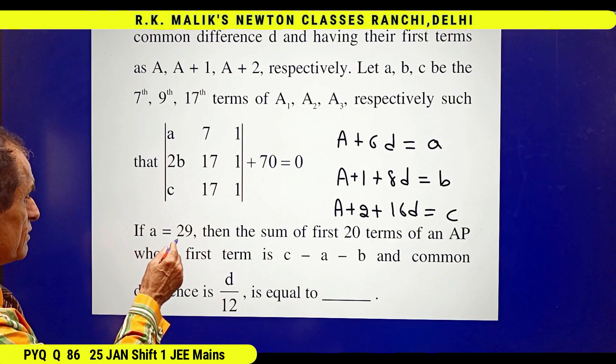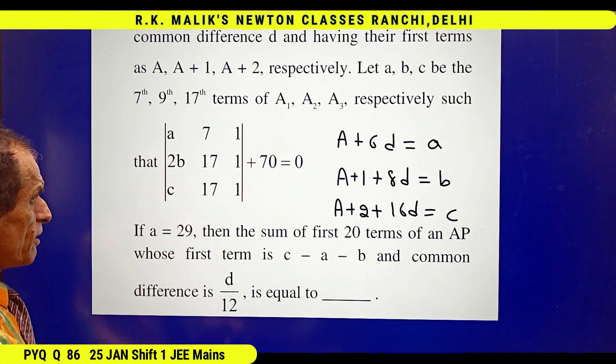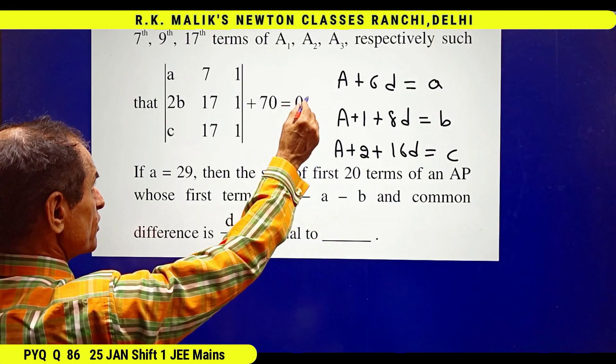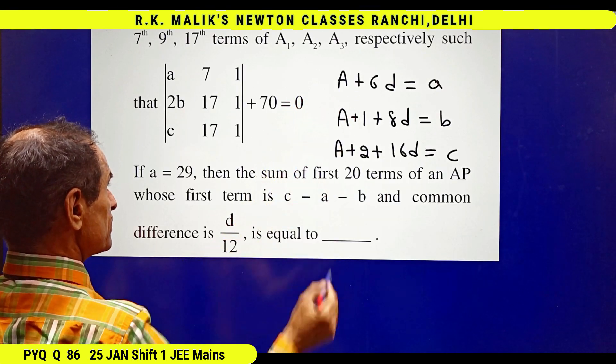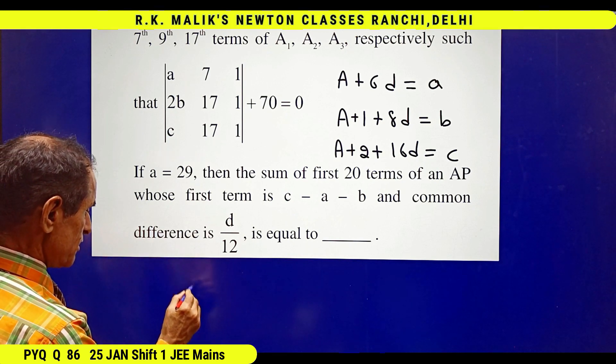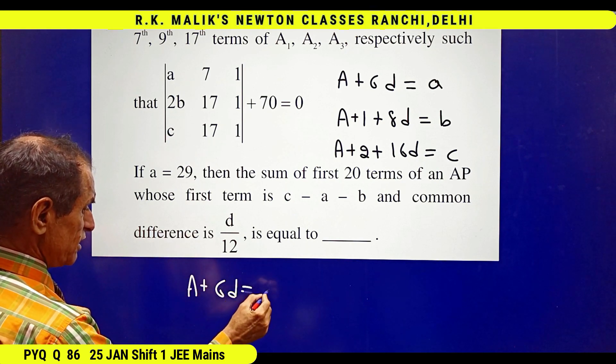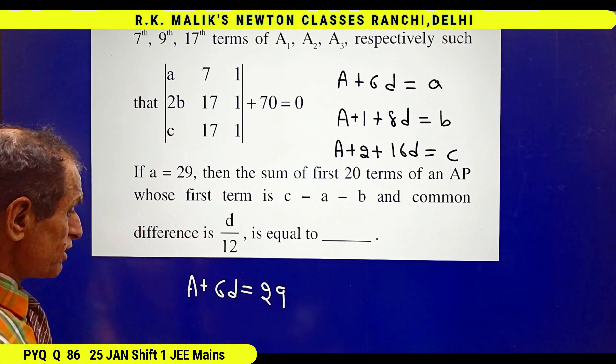Second thing: because a is equal to 29 is given, hence one relation between capital A and D is A plus 6D equal to 29.